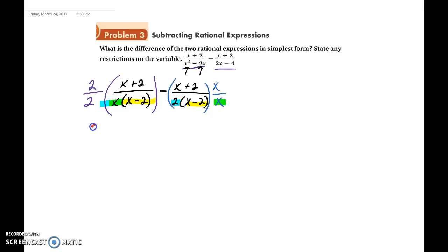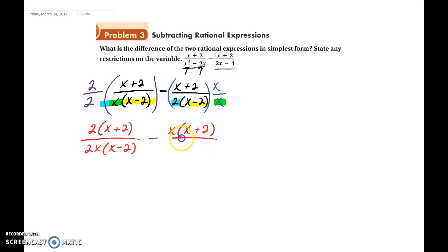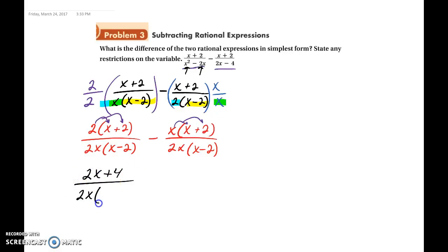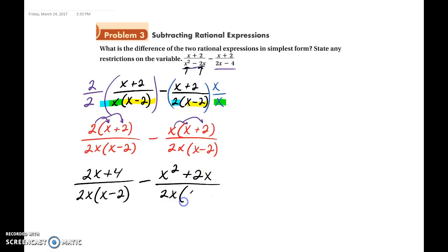So now I'll write this out as 2 times x plus 2 over 2x times x minus 2, minus x times x plus 2 over 2x times x minus 2. We will then distribute the 2 in and distribute the x in, so we're left with 2x plus 4 over 2x times x minus 2, minus x squared plus 2x over 2x times x minus 2.